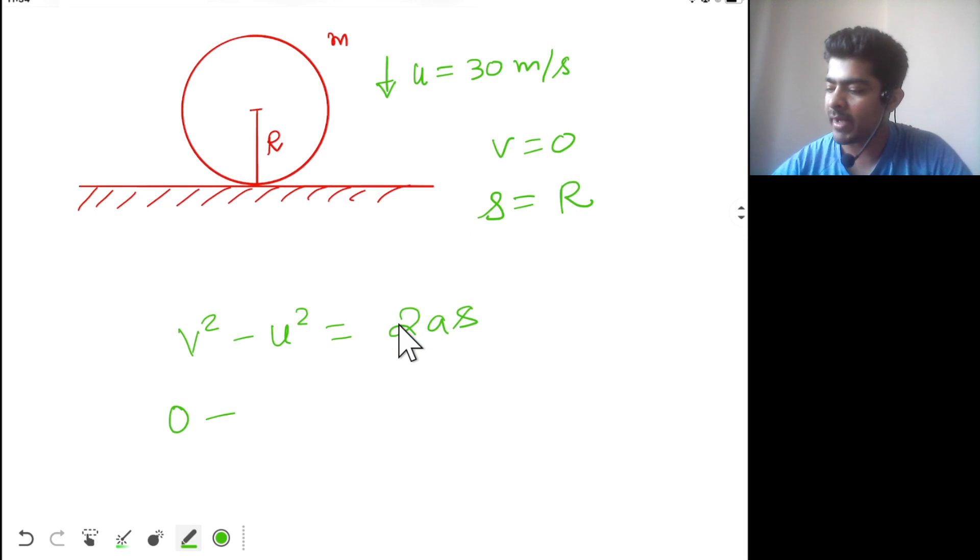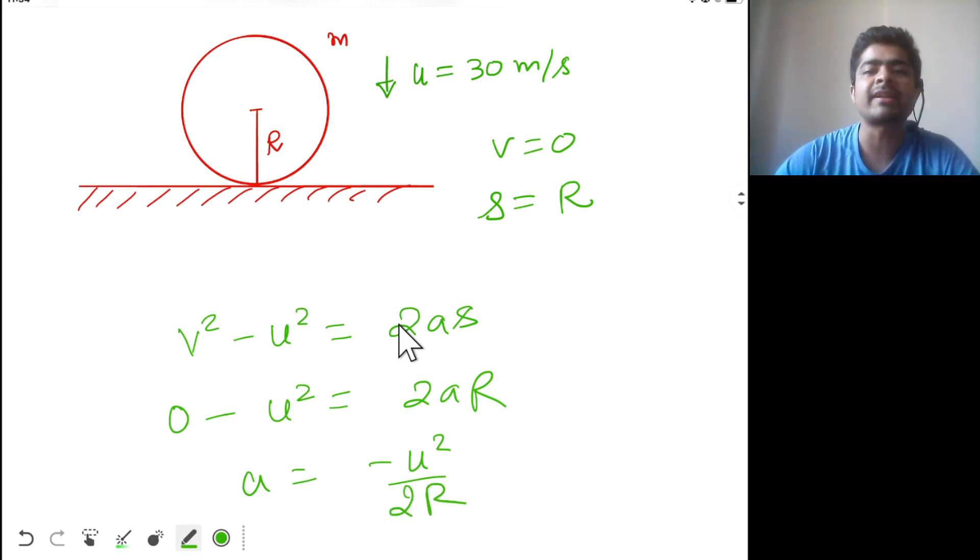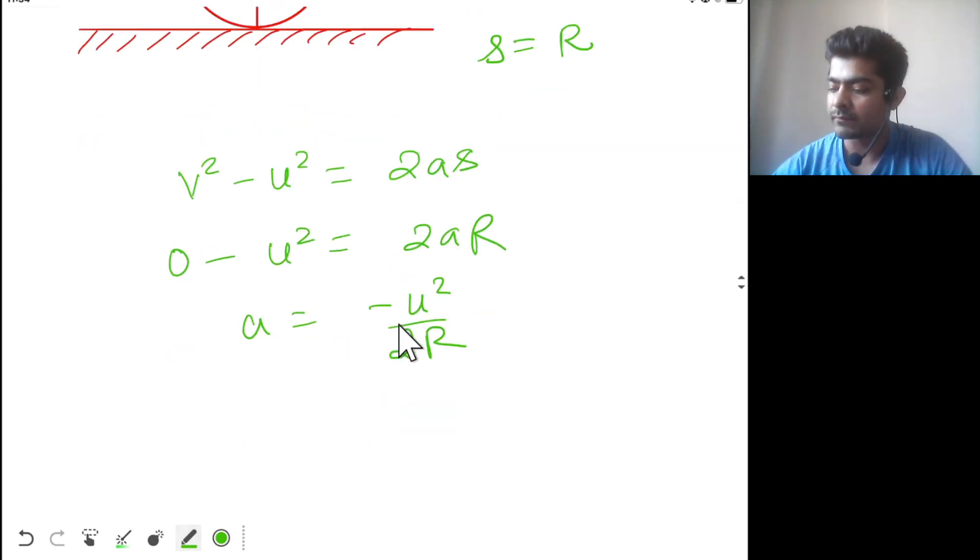So 0 minus u squared equal to 2ar, so we get a equal to minus u squared by 2r. We found the acceleration, so force by one drop will be mass into acceleration.